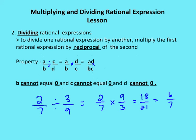The second property is the division property for rational expressions. When dividing rational expressions, we take the reciprocal of the second expression and multiply it by the first. So a over b divided by c over d equals a over b times d over c, which gives us a times d over b times c.